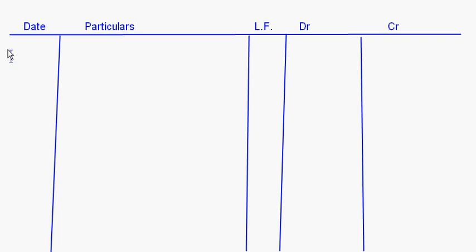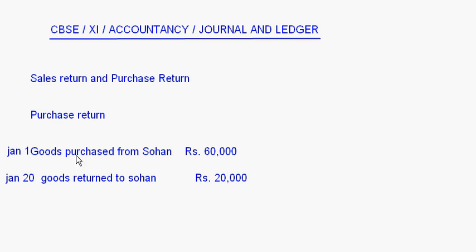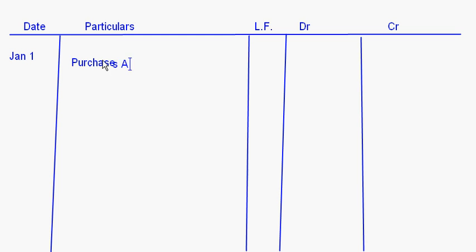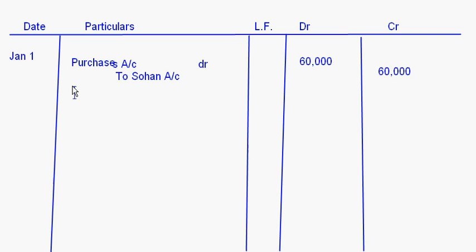The date is given so I will put the date here. Goods purchased from Sohan — we take it as a credit purchase. So here I will write purchases account debit, to Sohan account. Debit all expenses and losses — purchases is the expense, and the supplier is Sohan. The amount is 60,000 on both sides. The narration reads: being goods purchased from Sohan.